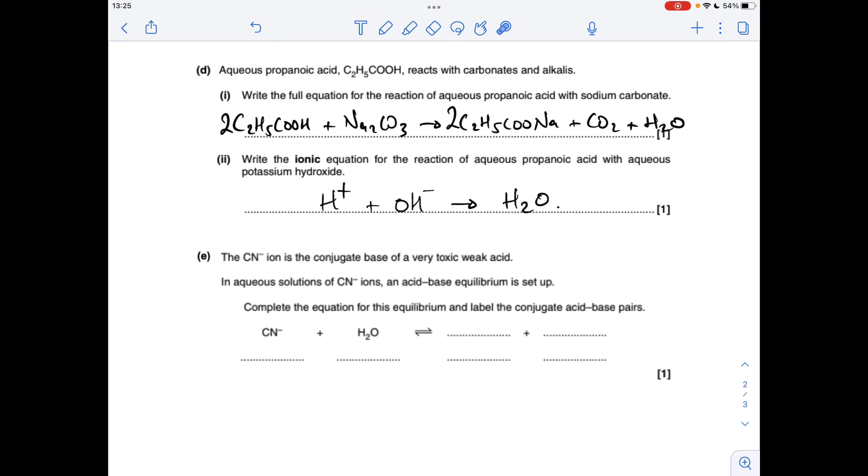Part E now. We're told that the cyanide ion is a conjugate base, so therefore it's going to be accepting a proton in this process. Where's it going to get the proton from? The H2O. So that means the CN- ion will become HCN, that very toxic weak acid. And the H2O will become the OH- ion. We'll just label up the acid-base pairs and then we're done.